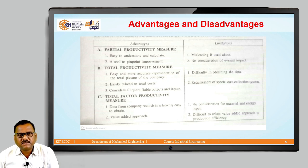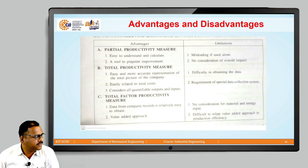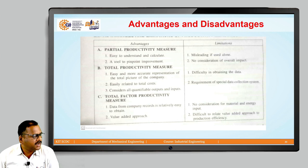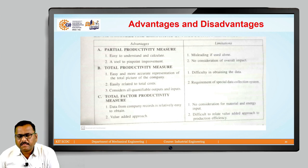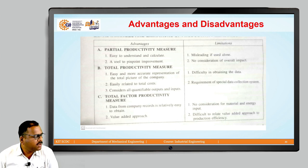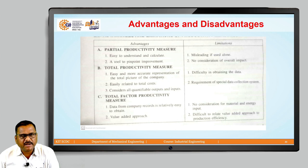The third advantage of total productivity measure is it considers all quantifiable outputs and inputs. Regarding total factor productivity measure, the first advantage is that data from company records is relatively easy to obtain. The second advantage is the value added approach — meaning we are definitely going to improve value for that particular product or component.